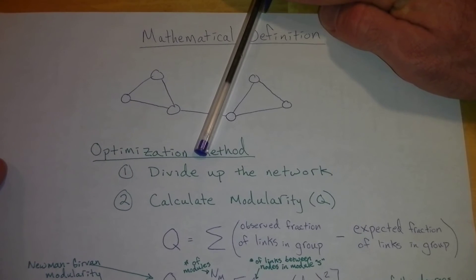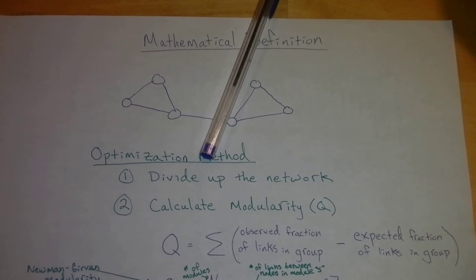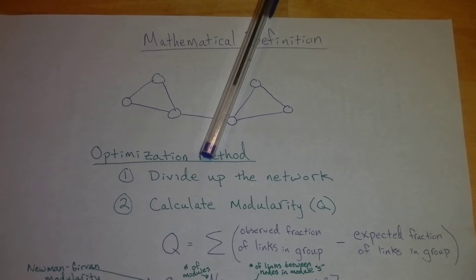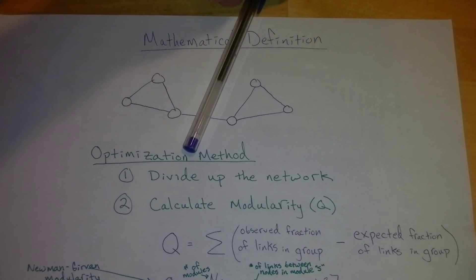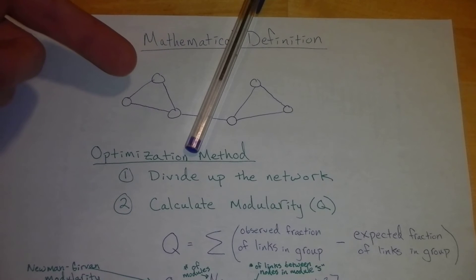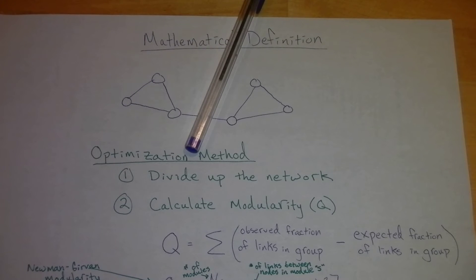We'll go to our definition of modularity in the bottom. You can see that modularity is essentially represented by Q. And it represents, for each of the modules, you look at the observed fraction of links in the group minus the expected fraction of links in the group.